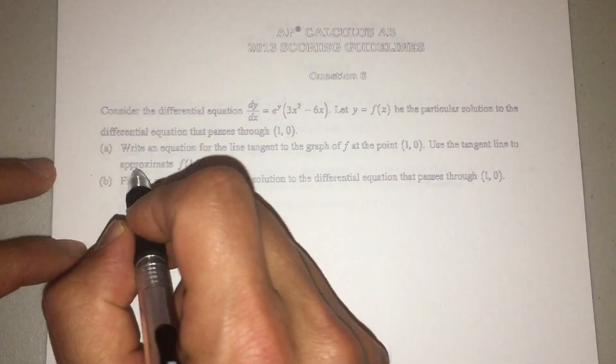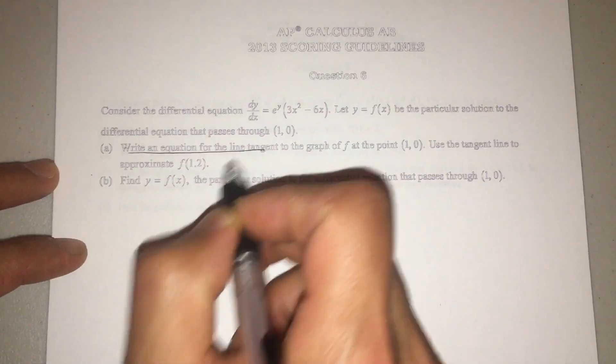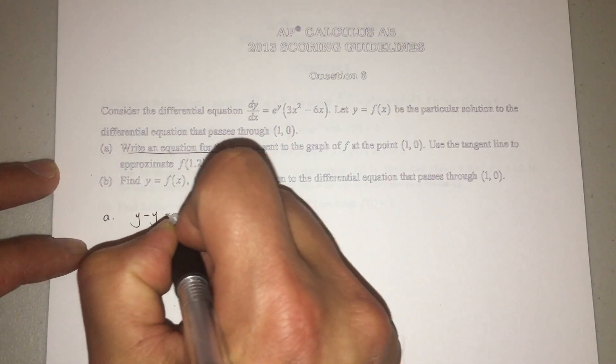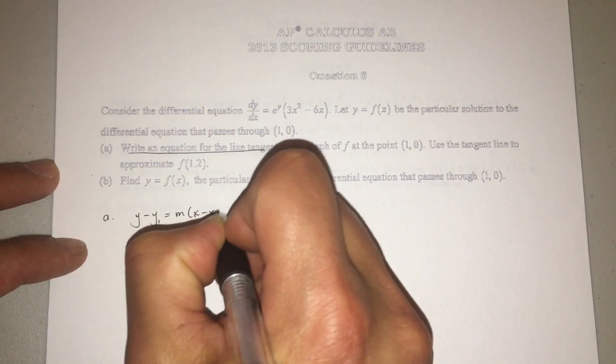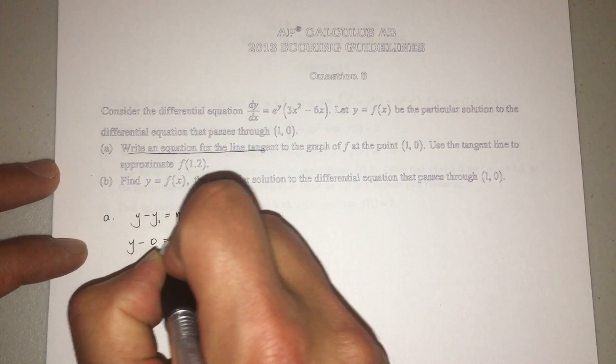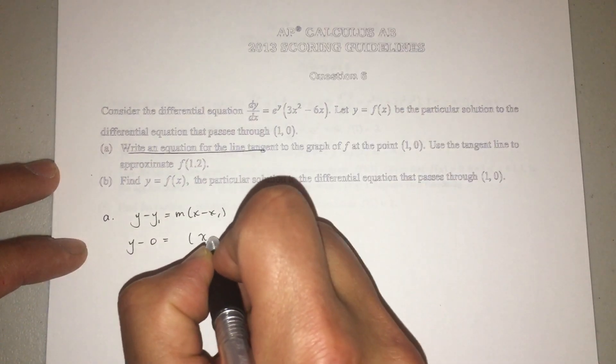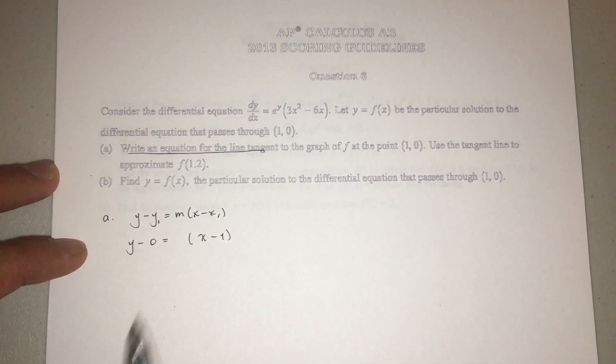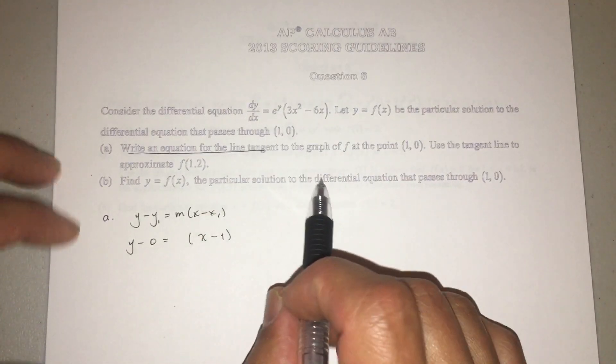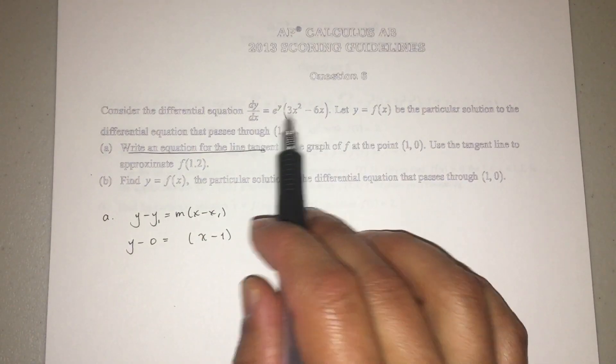So remember, as soon as we see this, write the equation of the tangent line. We're going to go ahead and start with y - y1 = m(x - x1). Go ahead and put your initial condition. When x is 1, y is 0, we don't know our slope yet.